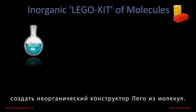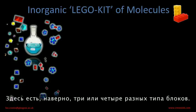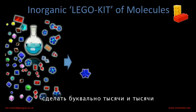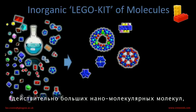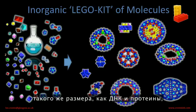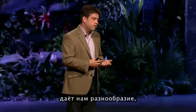The way to test it in the laboratory is to make it minimal. What we're going to try and do is come up with an inorganic Lego kit of molecules. Forgive the molecules on the screen, but these are a very simple kit — only maybe three or four different types of building block. We can aggregate them together and make literally thousands and thousands of really big nanomolecular molecules, the same size as DNA and proteins, but there's no carbon in sight. Carbon is banned.